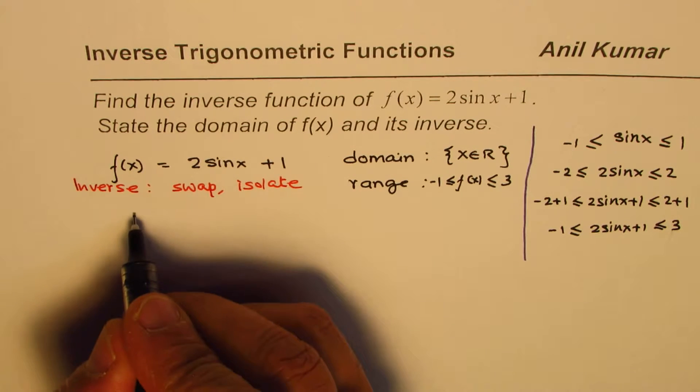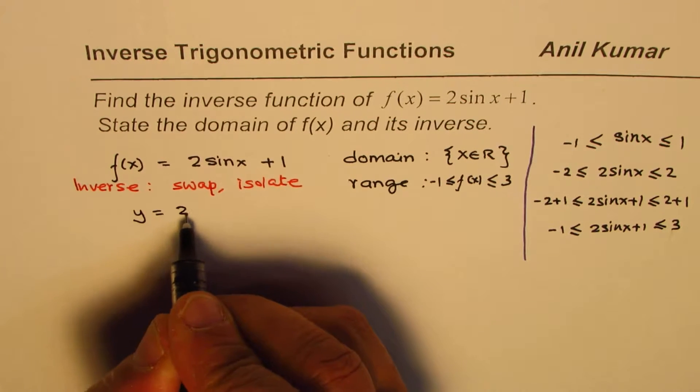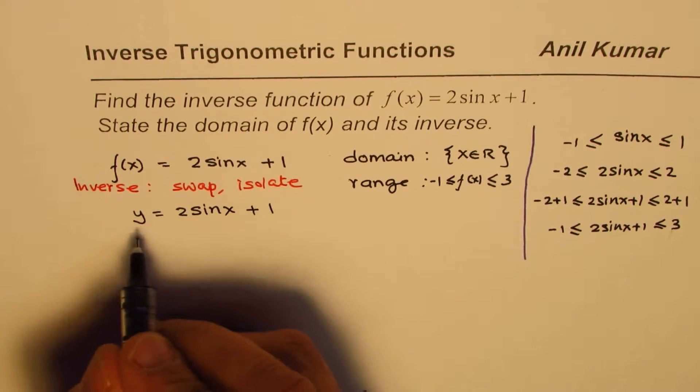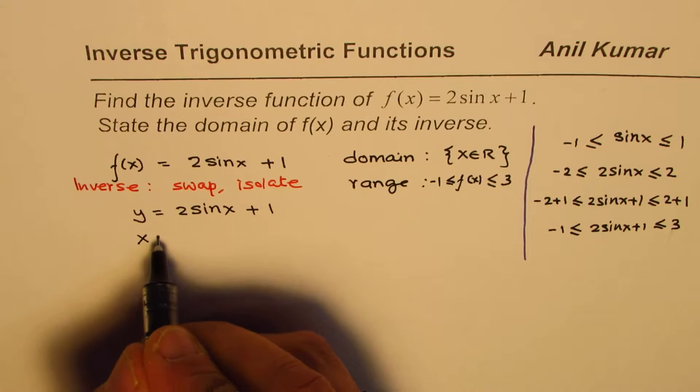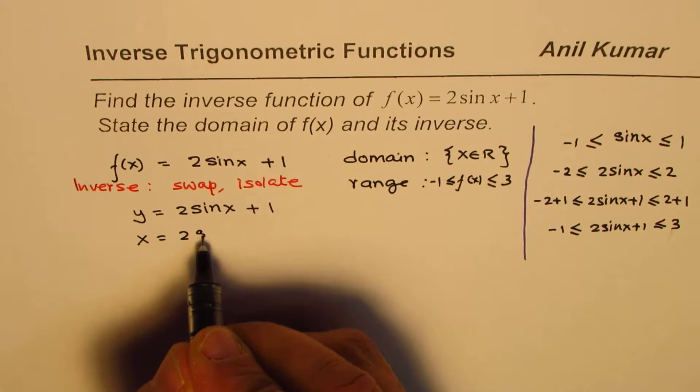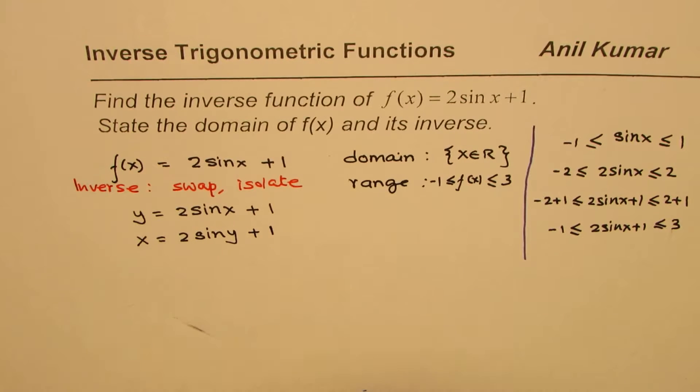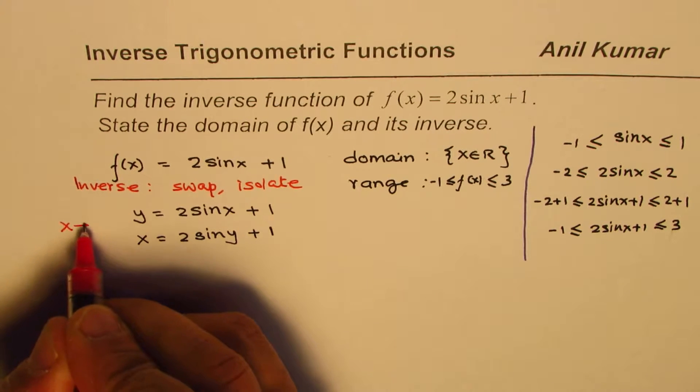So, let me rewrite this as y = 2sin(x) + 1. So, when I swap it, I'll replace y with x and x with y. So, we have x = 2sin(y) + 1.